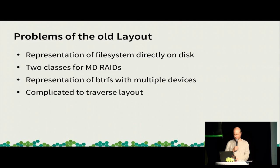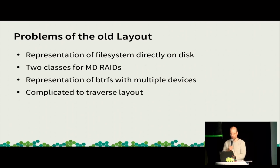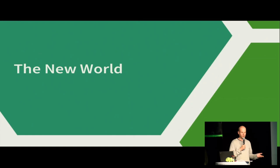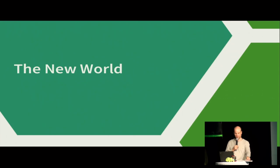Another problem is the bindings — they are partly generated by SWIG, but our callbacks are handmade for whatever reason. So about two and a half years ago the YaST team said we want to get rid of this target map — it's terrible, undocumented, we don't understand it any longer. And then during one hack week, I came up with a new idea.